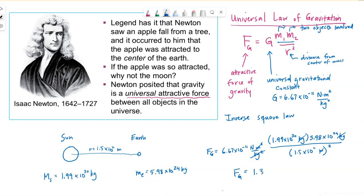When I plug these numbers in, I'm getting 3.5 times 10 to the 22 newtons. Huge force of gravity. It is this force of gravity, of course, that is causing the earth to orbit the sun.